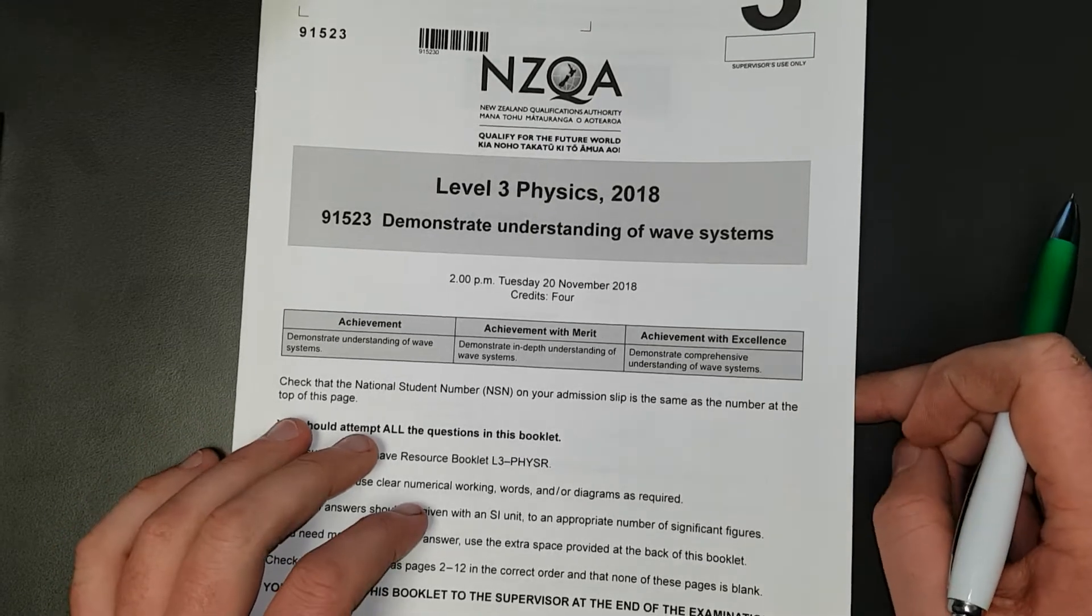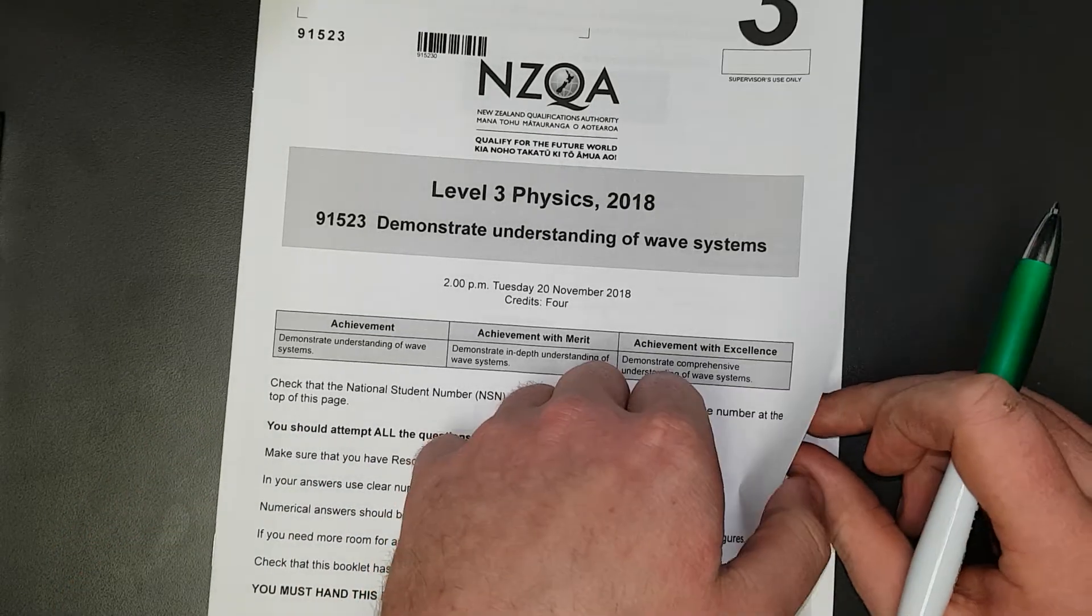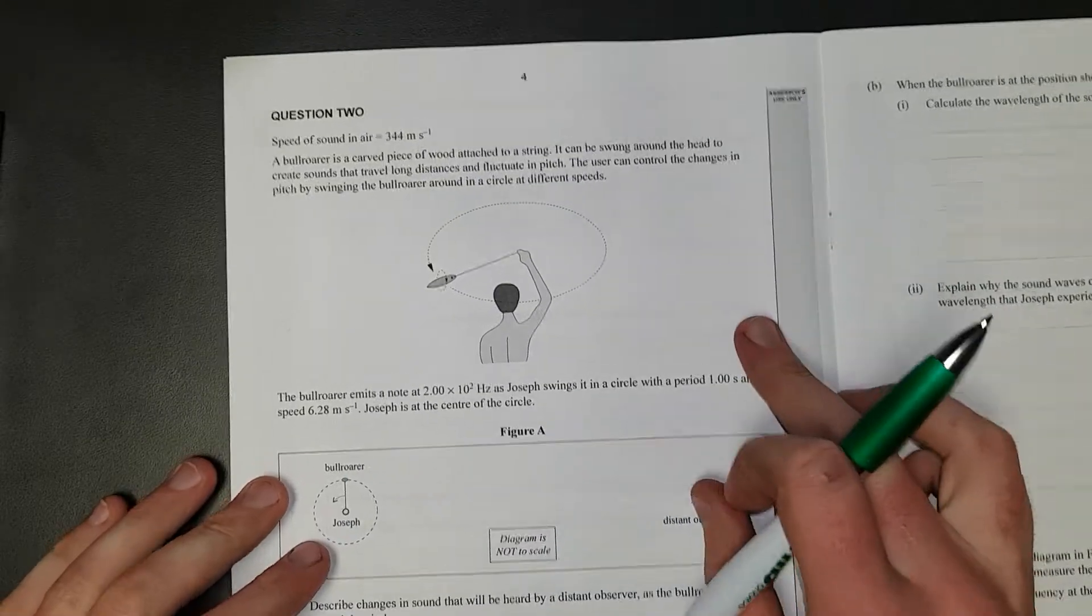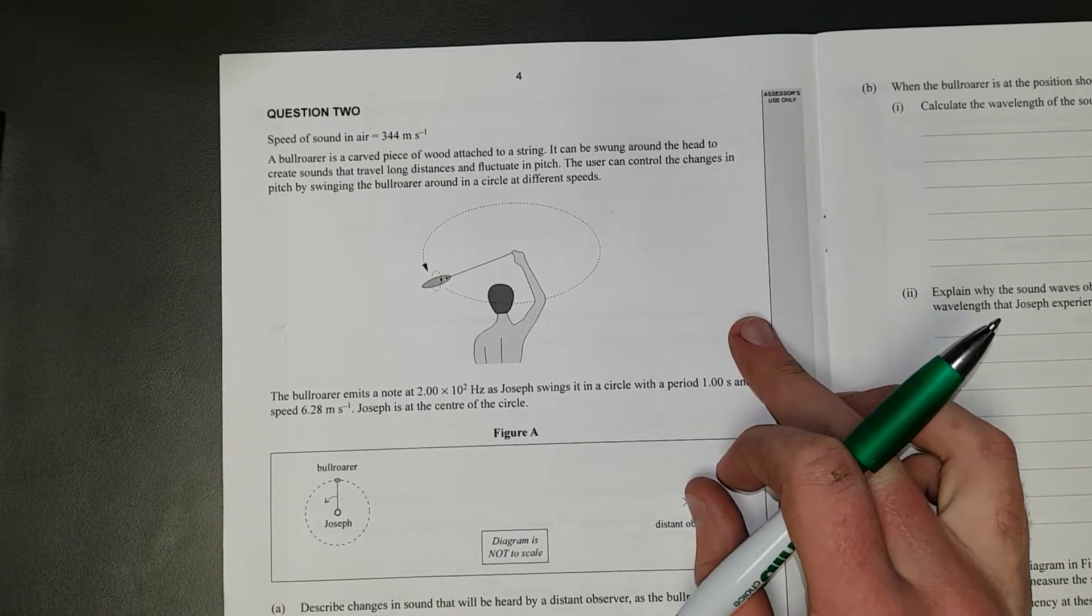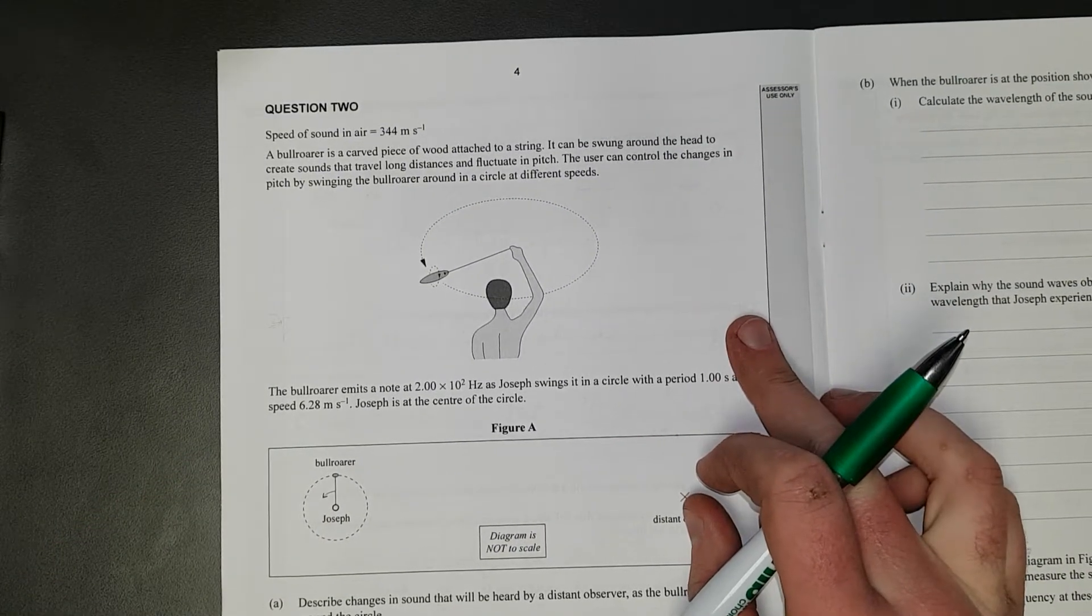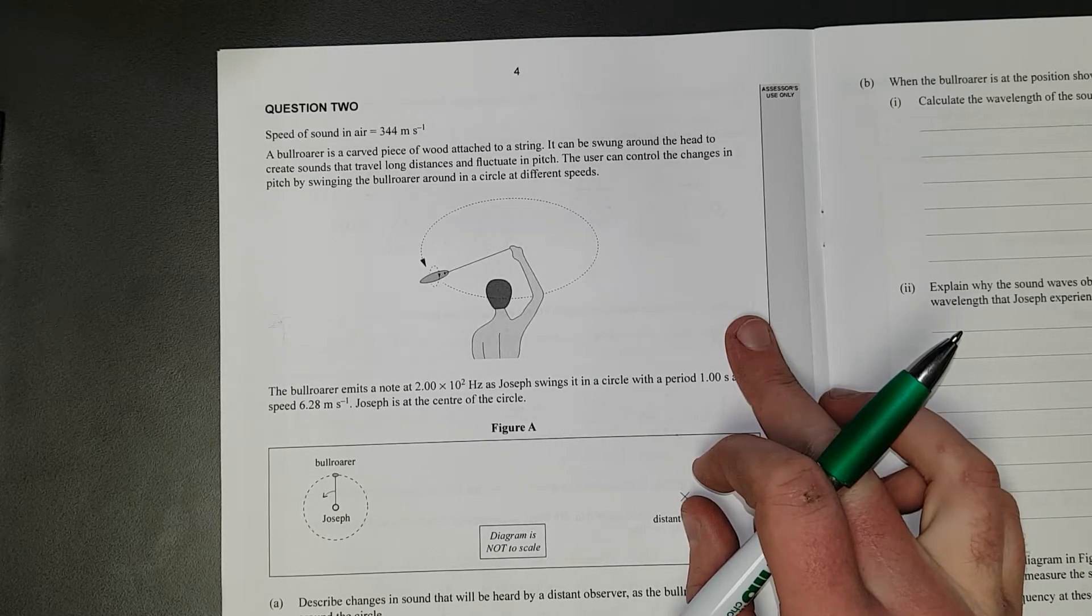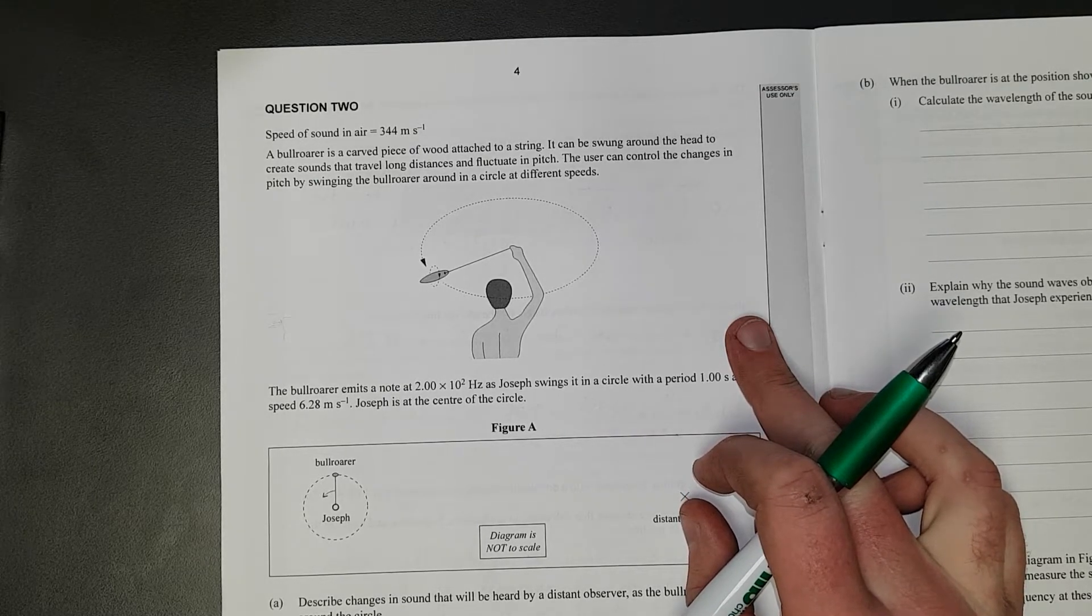In this video I'll be working through the Level 3 2018 Waves Exam Question 2. A bullroarer is a carved piece of wood attached to a string. It can be swung around the head to create sounds that travel long distances and fluctuate in pitch.